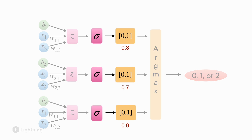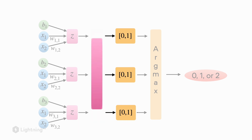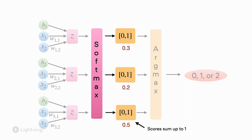To address this issue and make these probability scores sum up to one, we use the Softmax activation function, which is essentially a modified version of the sigmoid activation function that rescales the probabilities so that they sum up to one.